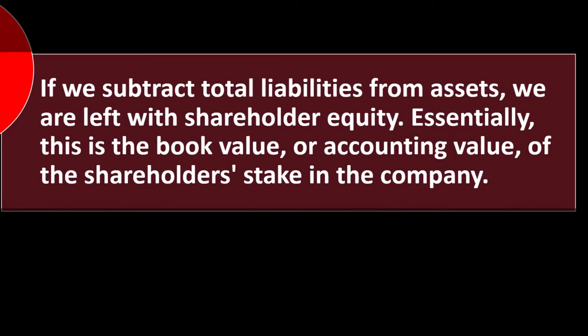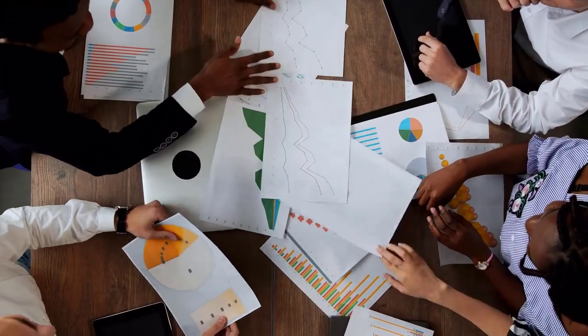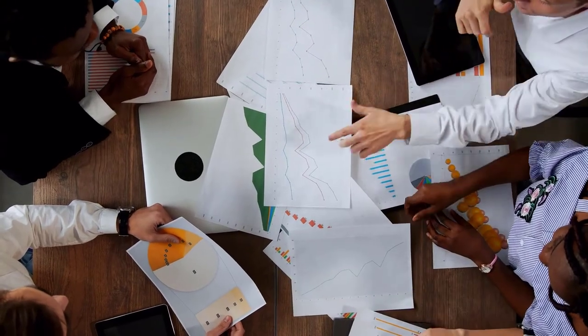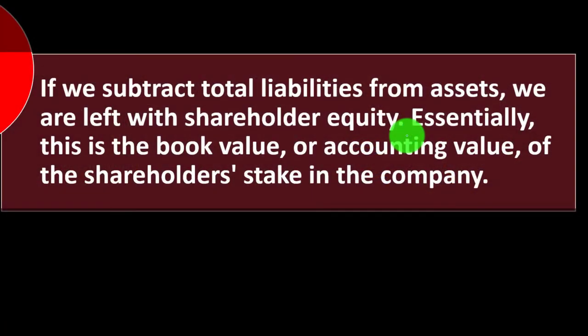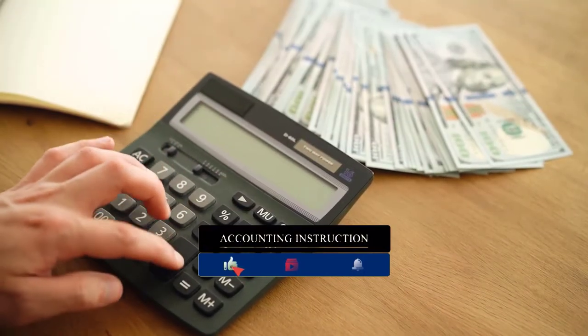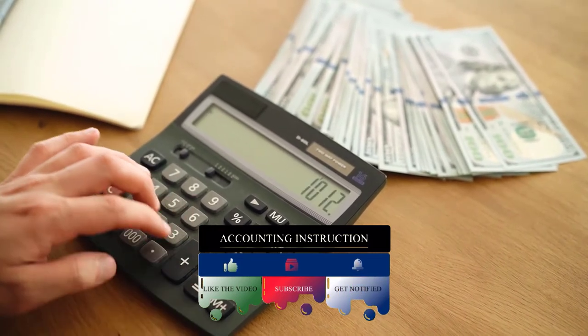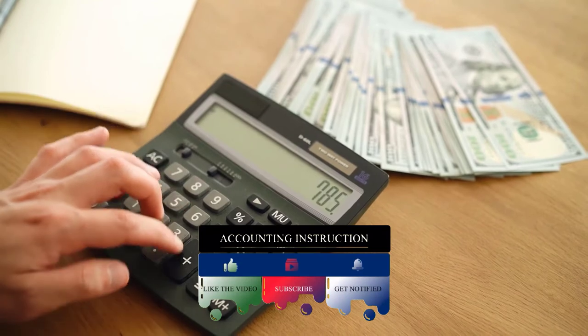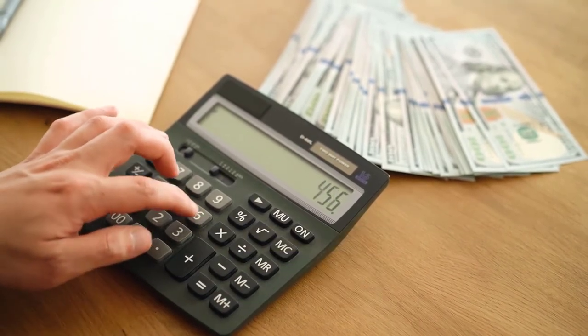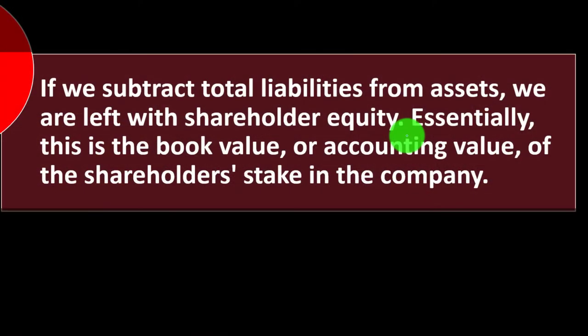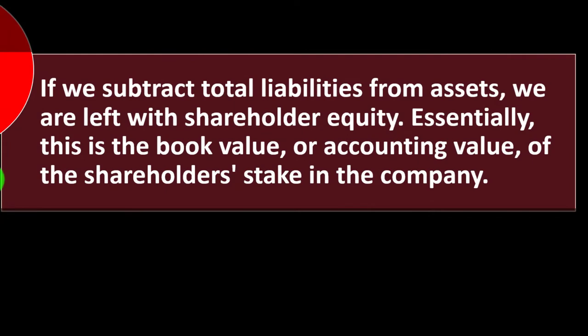If we subtract total liabilities from assets, we are left with shareholder equity — the book value of the company. Taking what the company owns minus its total obligations gives the net equity, attributable to the owners, which is why stock investments are called equity investments. This book value is a starting point for valuation; if the company were liquidated — selling assets and paying off liabilities — the actual result might differ from the book value.